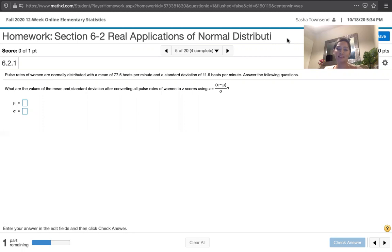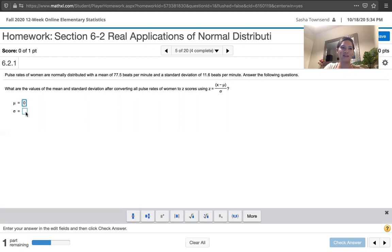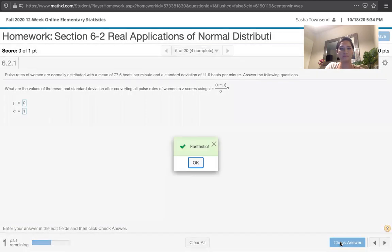Well, if we've converted them to z-scores, the mean is zero because z-scores have a mean of zero and the standard deviation is one. All right, great.